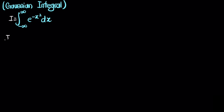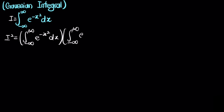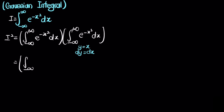So instead of computing i, I'll compute i squared. I'll write the whole thing twice: the integral from negative infinity to infinity of e to the negative x squared dx, copied twice. Then I'll do a trivial substitution where I let y equal to x, so dy equals dx — just changing the dummy variable. So the first integral stays in x and the second one changes to the variable y.